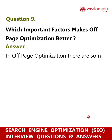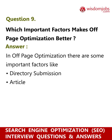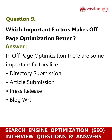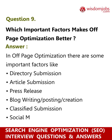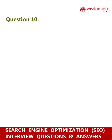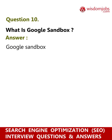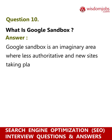Question 9: Which important factors make off-page optimization better? Answer: In off-page optimization there are some important factors like directory submission, article submission, press release, blog writing, posting creation, classified submission, and social media. Question 10: What is Google Sandbox? Answer: Google Sandbox is an imaginary area where less authoritative and new sites are held while they are becoming popular and authorized on the web.